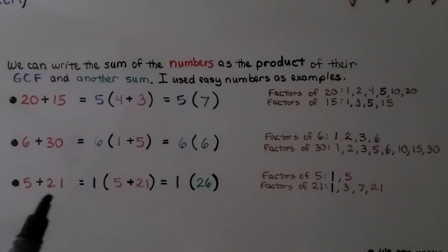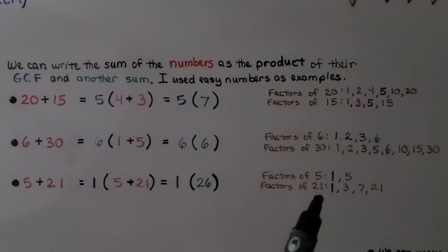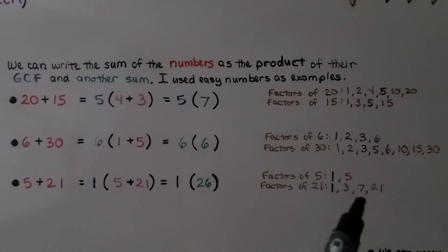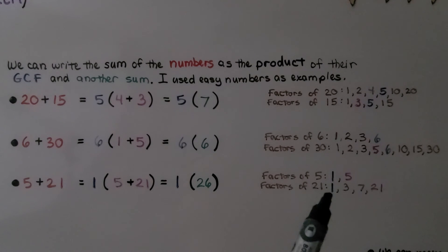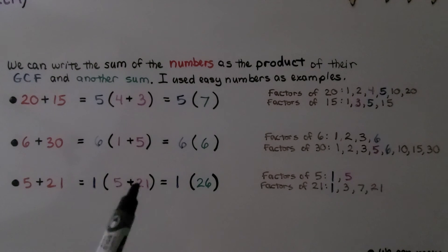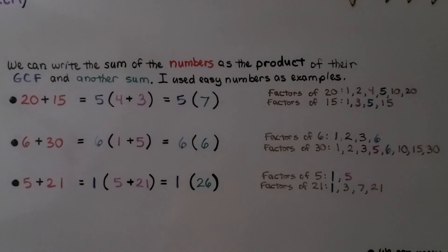For 5 plus 21, the factors of 5 are 1 and 5 — it's a prime number. The factors of 21 are 1, 3, 7, and 21. The only factor they have in common is 1, so 1 goes outside the parentheses. 1 times 5 is 5 and 1 times 21 is 21, giving 1(5+21). 5 plus 21 is 26, so 5 plus 21 equals 1 times 26.